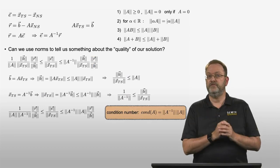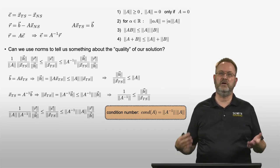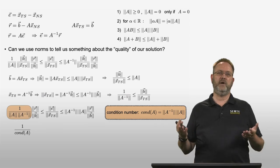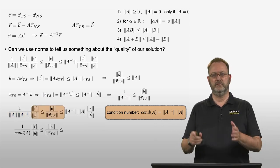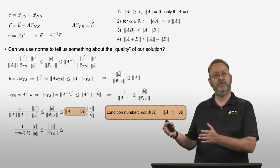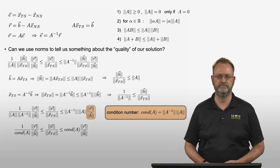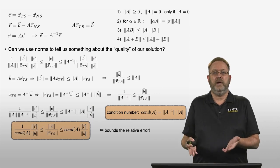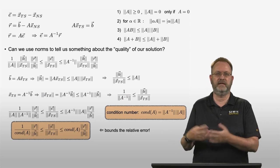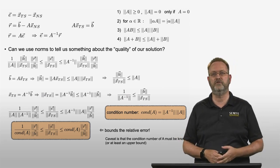The condition number is the norm of A times the norm of A inverse. Using the condition number, the lower bound for the norm of the relative error is 1 divided by the condition number of A times the ratio of the residual norm divided by the norm of B. The upper bound is the condition number times the ratio of the residual norm divided by the norm of B. We can calculate the residual, its norm, the norm of B, and if we can calculate the condition number of the matrix, we have both an upper and lower bound for our relative error.